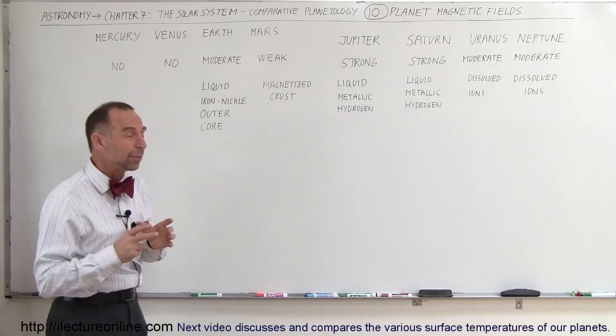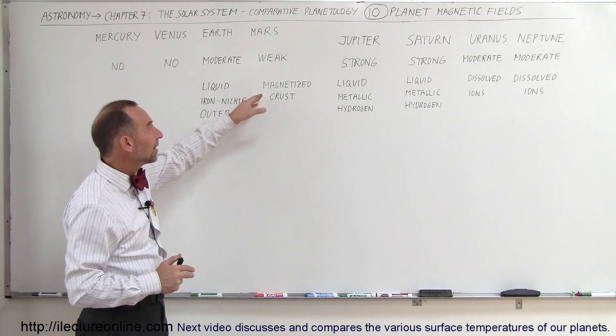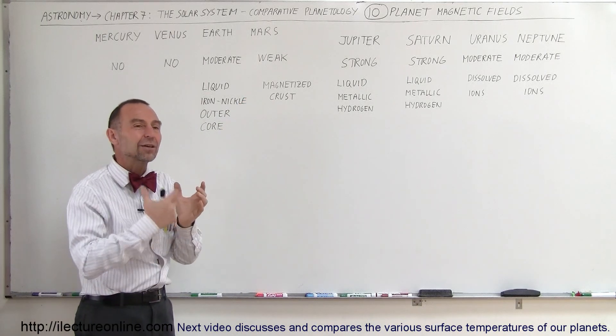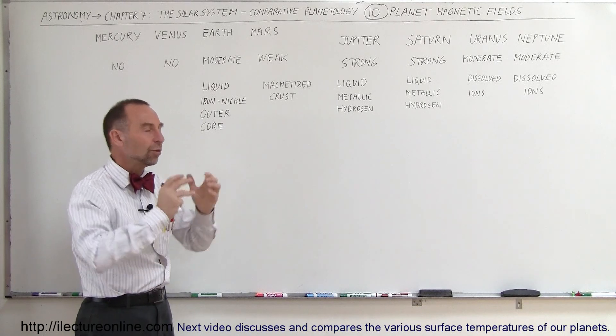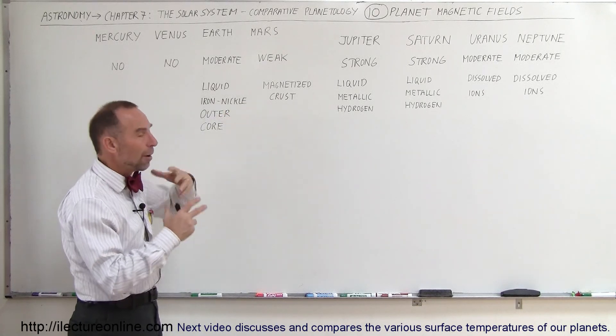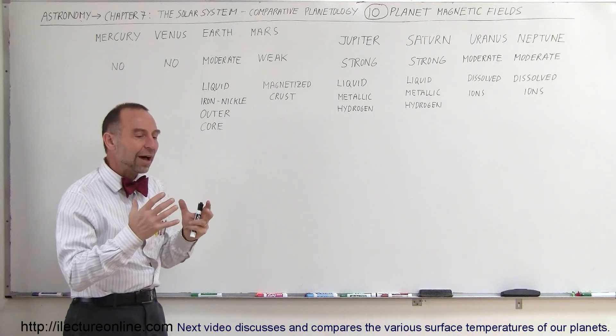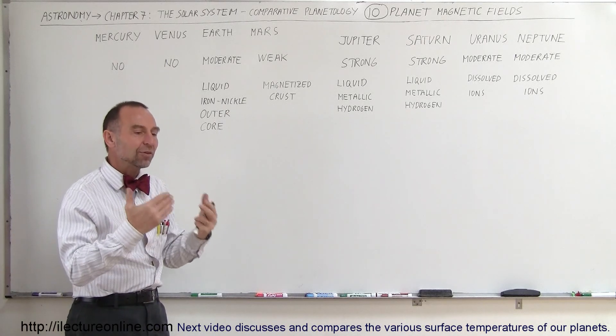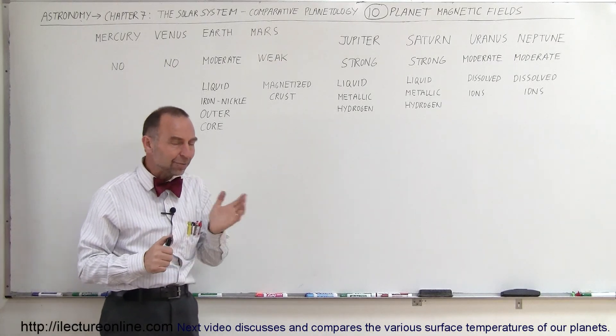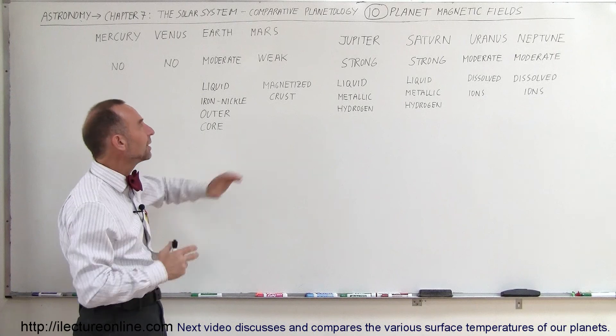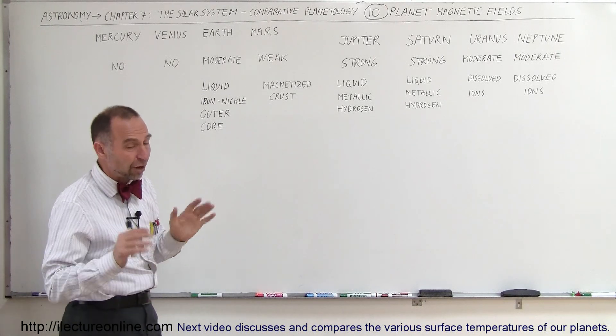Now, Mars, being much smaller, probably just has a solid metal core. But we do believe that the crust has magnetic field-producing properties and that the crust has what we think is a magnetized crust. So in other words, when the crust solidified, there must have been some properties there that caused the alignment of the atoms in the crust, causing that weak magnetic field to exist above the surface of Mars.